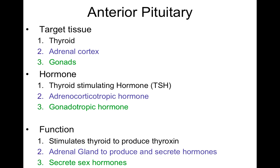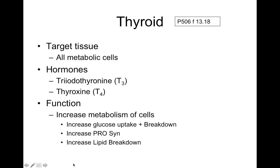The anterior pituitary targets the thyroid with thyroid stimulating hormone (TSH), stimulating the thyroid to produce thyroxin. It also sends adrenal corticotropic hormone to the adrenal cortex, causing the adrenal gland to produce and secrete its hormones. And the anterior pituitary sends gonadotropic hormone to the gonads, telling them to secrete their own hormones.